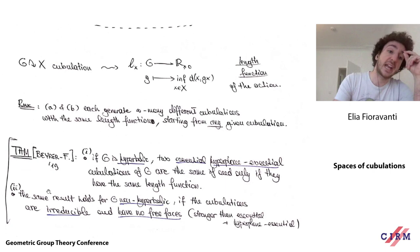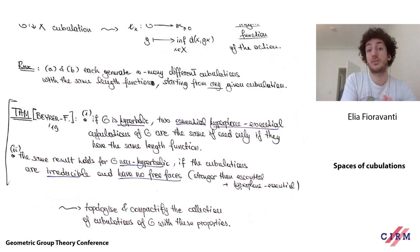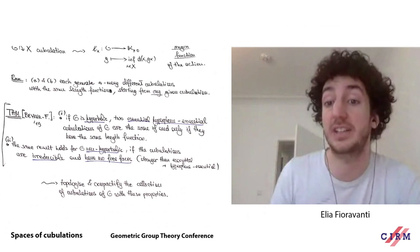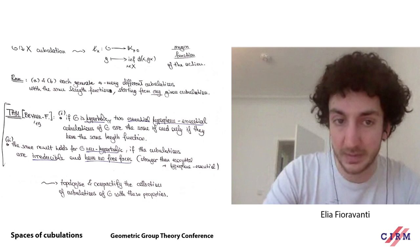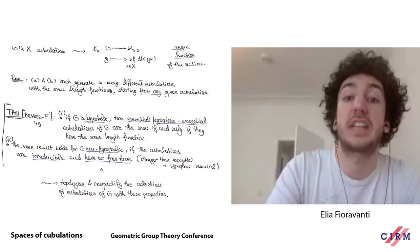Now that we have these results on length functions, we can embed the set of cubulations of G into the topological vector space of real-valued functions on the group, and so we get a topology on the space of cubulations. In fact, if we only look at cubulations up to homotheties, we also get an embedding into projective Ired functions, which is an infinite-dimensional projective space. In work with Beyrer, we also showed that the closure of the set of cubulations of G satisfying these properties, inside this infinite-dimensional projective space, is compact — giving a compactification of the space of cubulations.